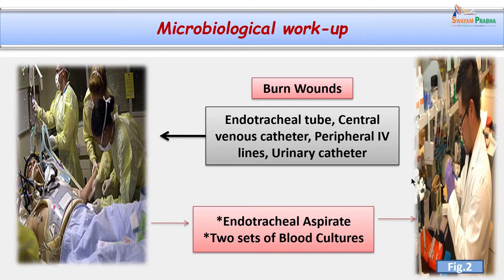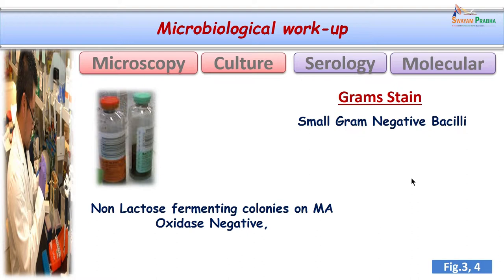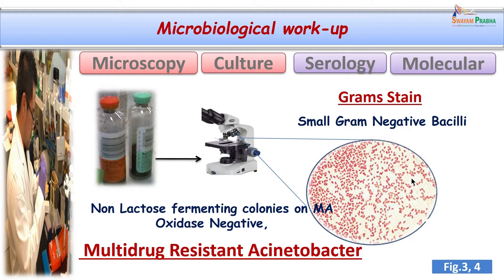All this deteriorating condition started bothering us and we began a detailed microbiological workup to find what organisms were causing fever in spite of wide antibiotic coverage. His endotracheal aspirate was collected, plus two sets of blood cultures were sent for detailed microbiological workup. We grew non-lactose fermenting colonies on MacConkey agar; on biochemical analysis they were oxidase negative. Gram staining showed small pleomorphic gram negative bacilli. Biochemical identification gave us the identity of the organism as Acinetobacter.